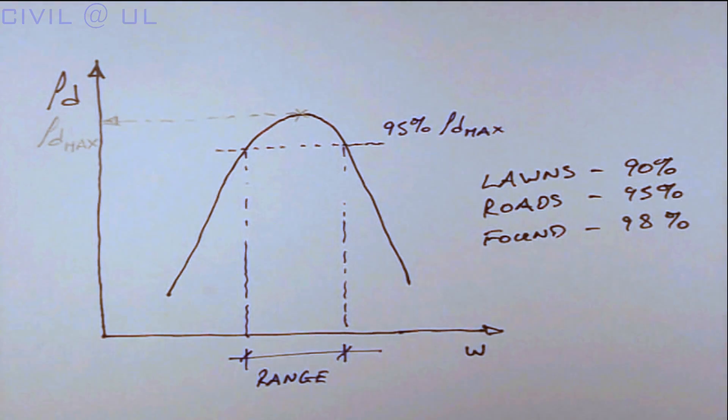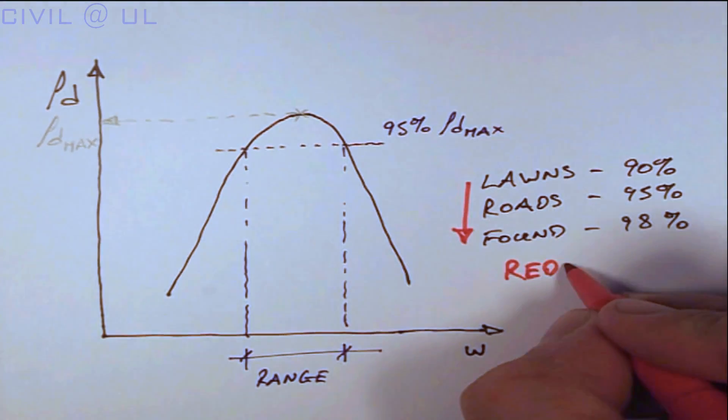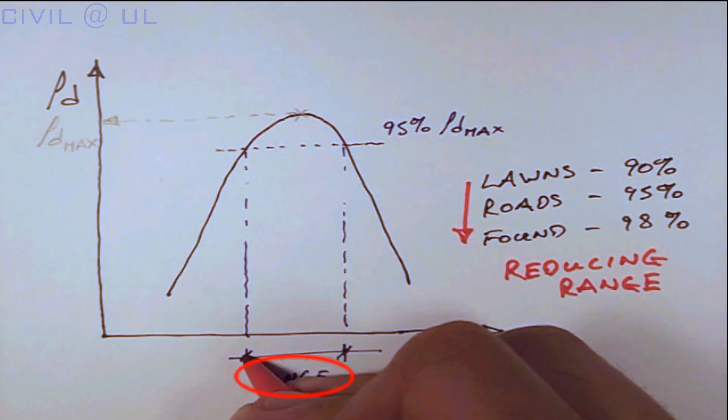Specifying a lower dry density has other practical advantages. It allows the contractor to achieve the required compaction while working within a range of moisture contents.